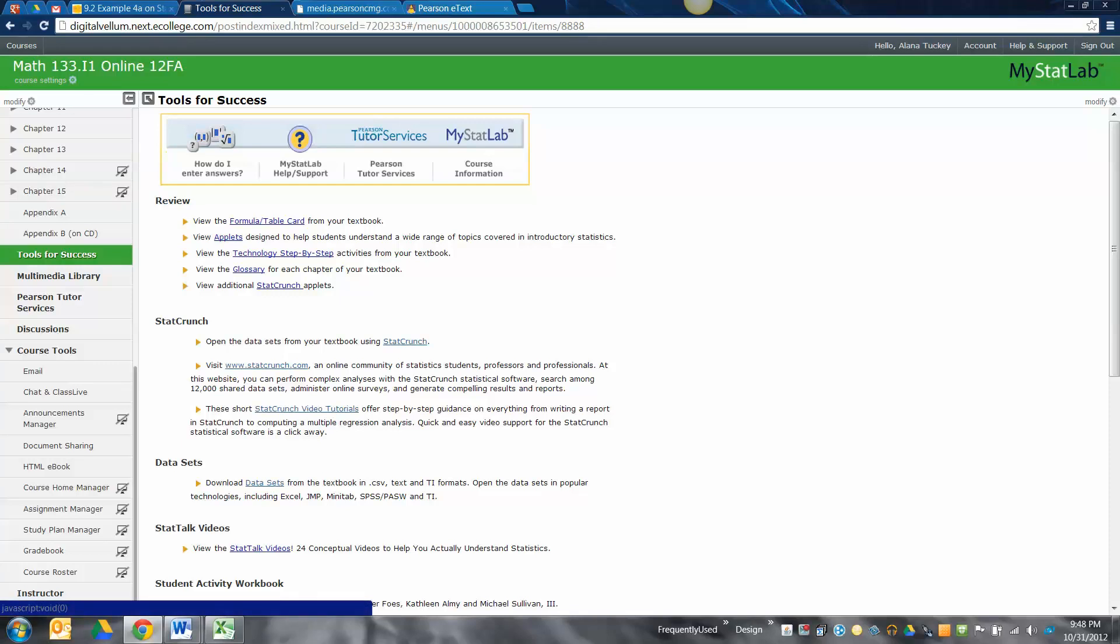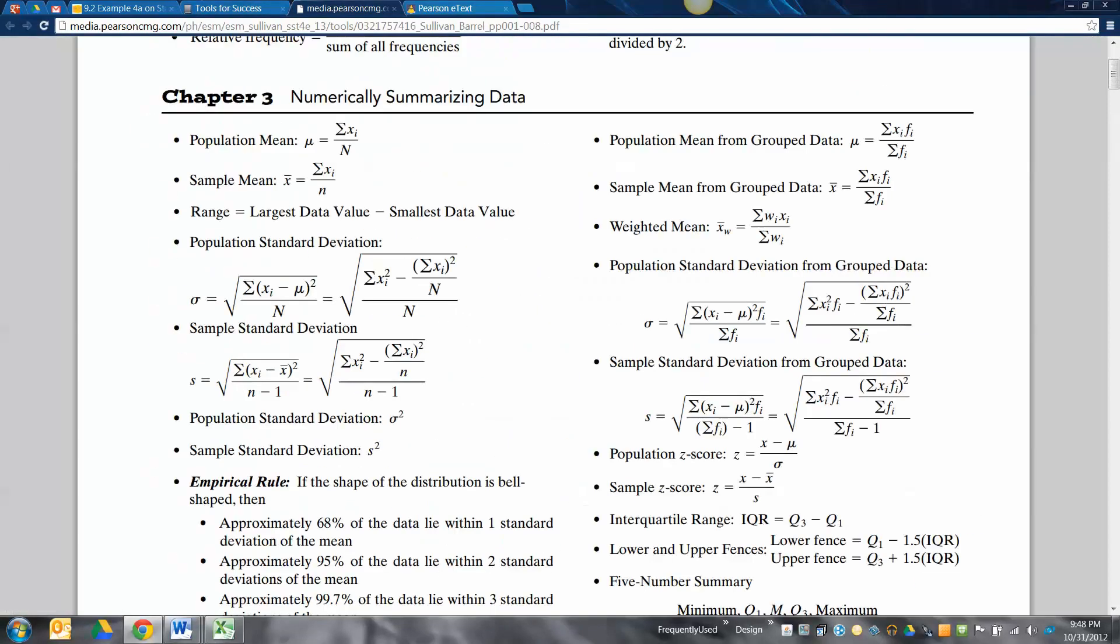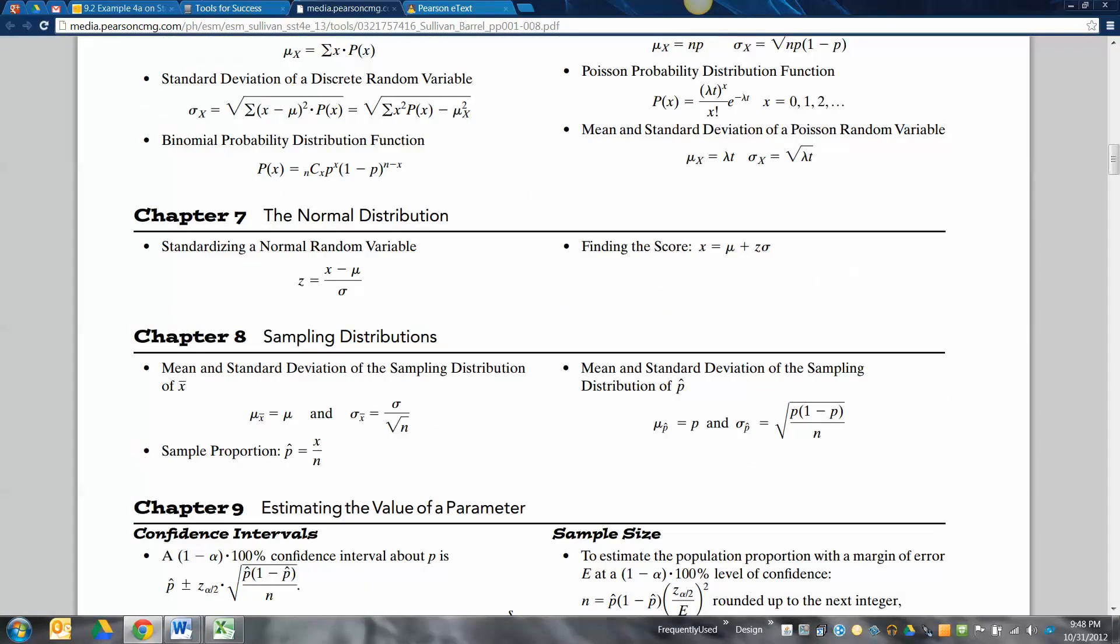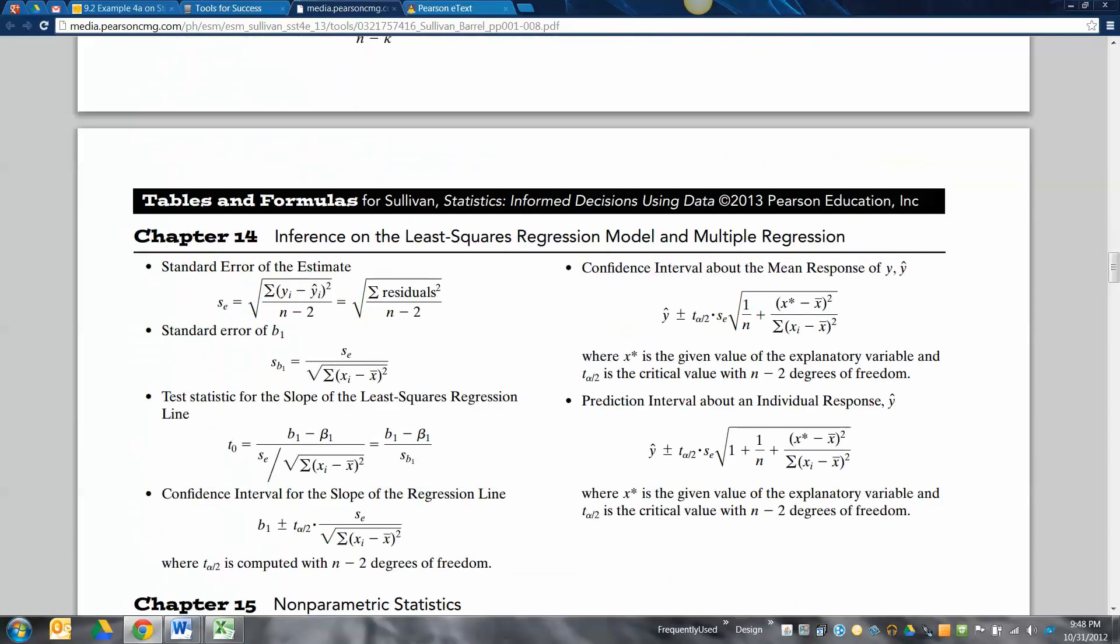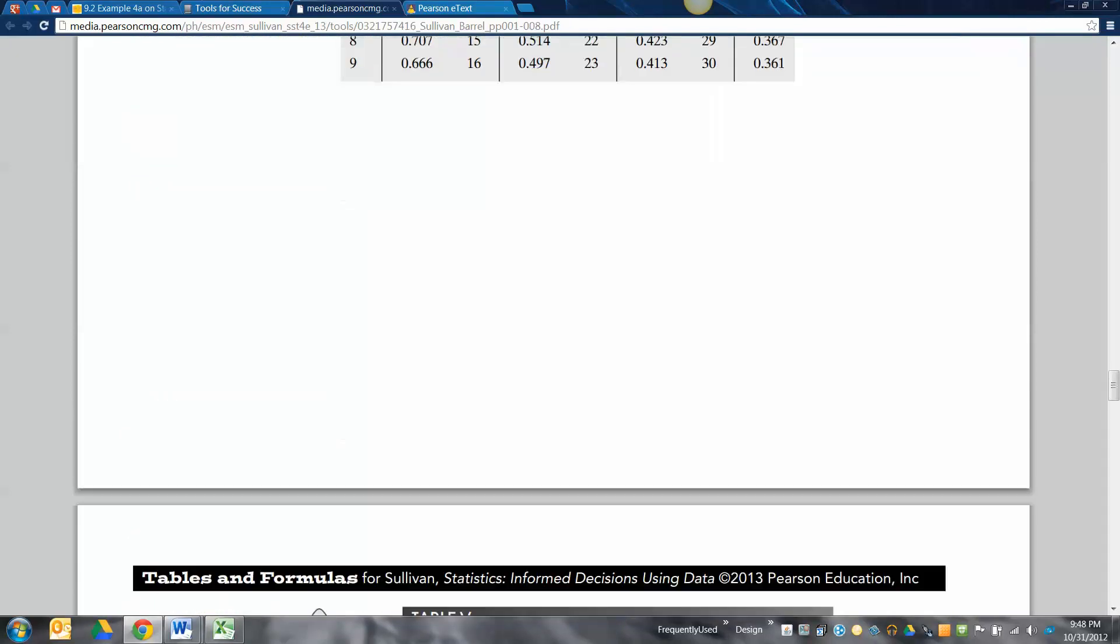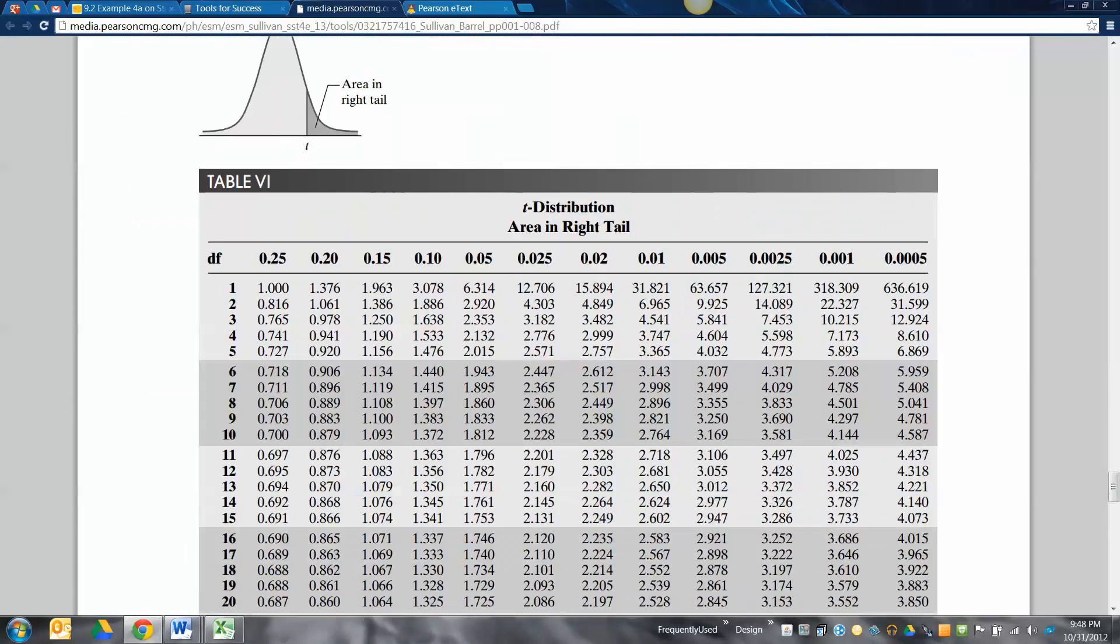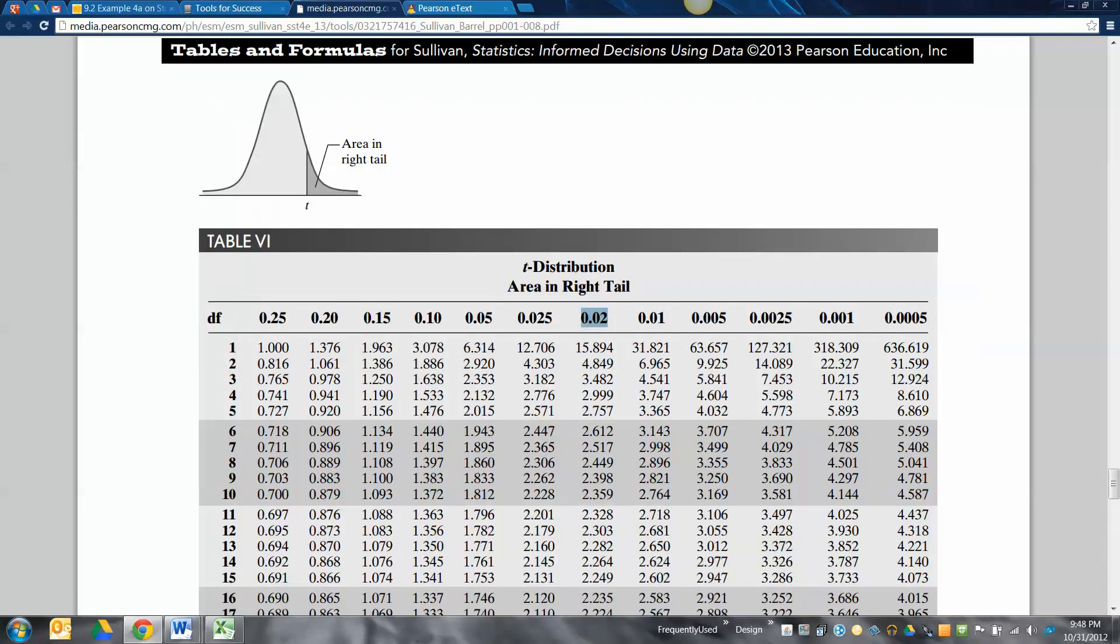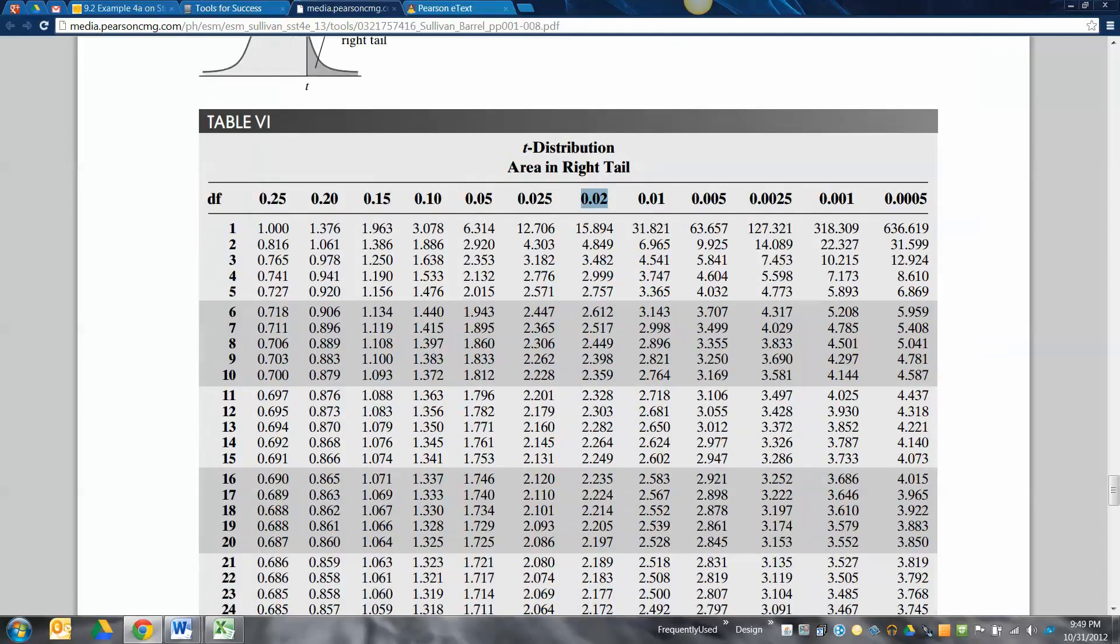Where do I get the table? If you click on Tools for Success, it's the formula table card. Down here, there's some tables. We're looking for this one right here - the t-distribution. This one is automatically the area in the right tail. We said the area in our right tail was 0.02, so this is the column we want. Our degrees of freedom was 20, and there it is: 2.197.